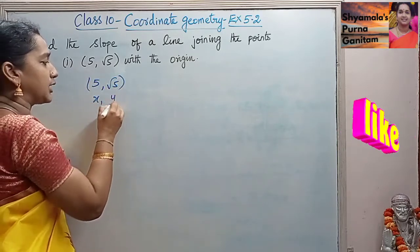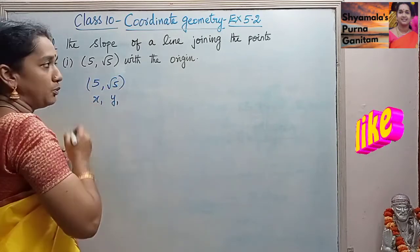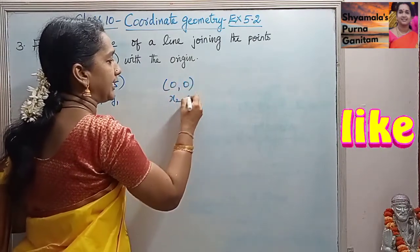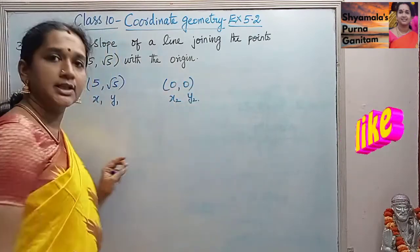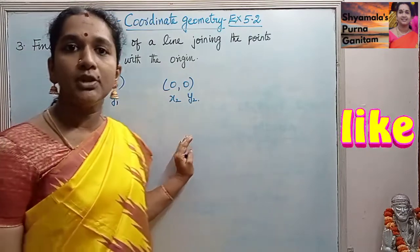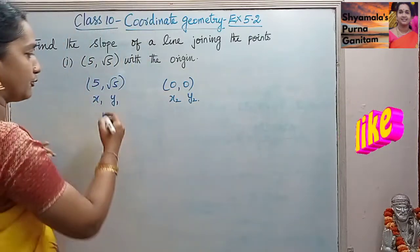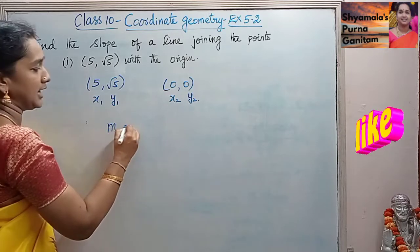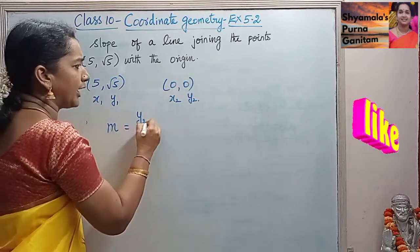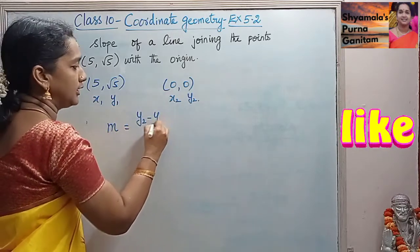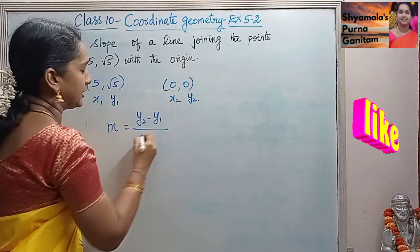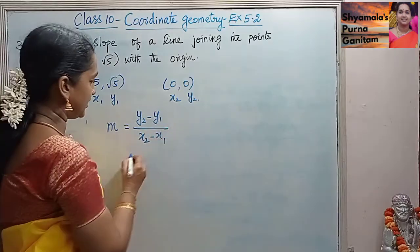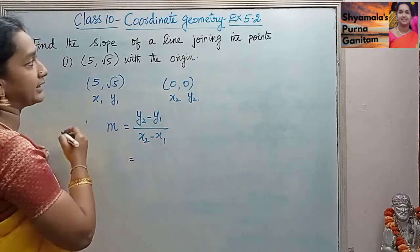We will take (5, √5) as x1 and y1, and the origin (0, 0) as x2 and y2. The formula for slope with two points is: m is equal to y2 minus y1 divided by x2 minus x1.